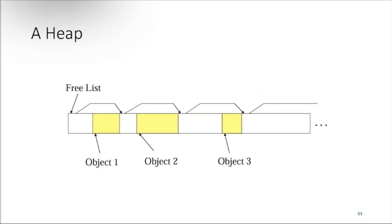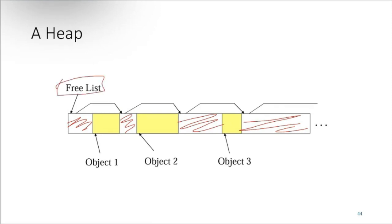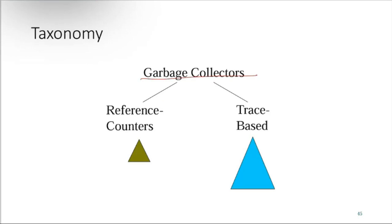The heap can be quite fragmented — free spaces are scattered throughout. The garbage collector maintains a free list: using a linked list structure, each free space points to the next available free space, so that if a large amount of data comes in, it can use all these free spaces together to store a bigger object. In the taxonomy, garbage collectors are divided into reference counters and trace-based collectors.